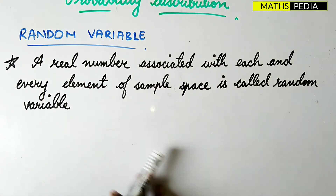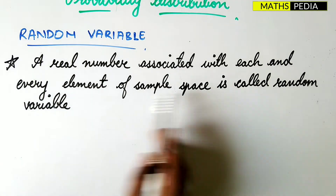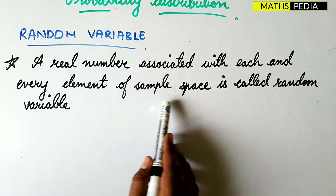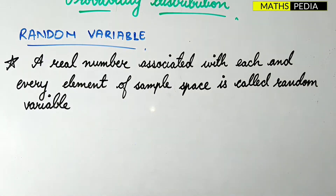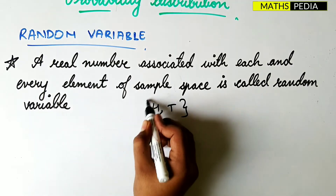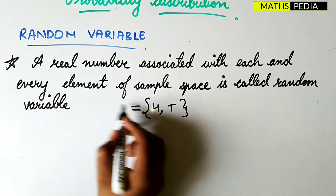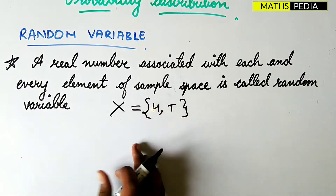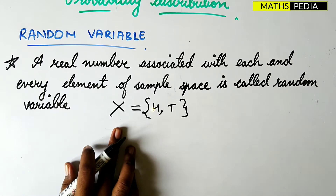The next point is random variable. A real number associated with each and every element of the sample space is called a random variable. As we discussed, head or tail are the elements of the sample space, and we normally use capital X to denote the random variable.